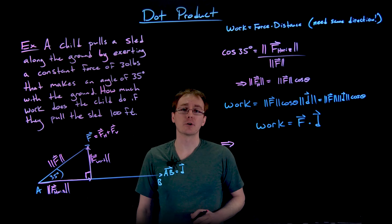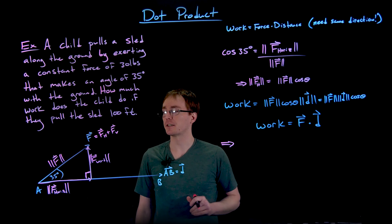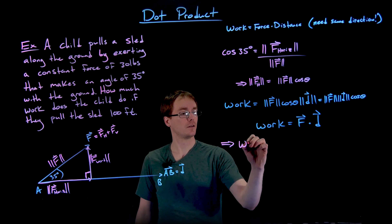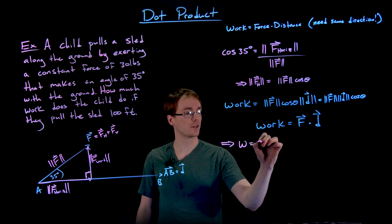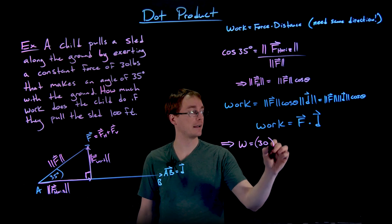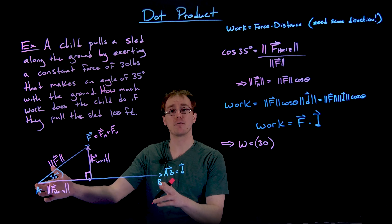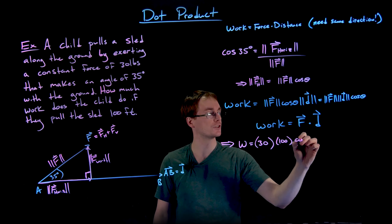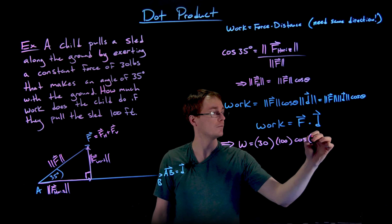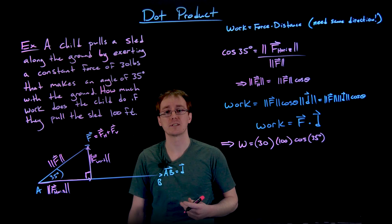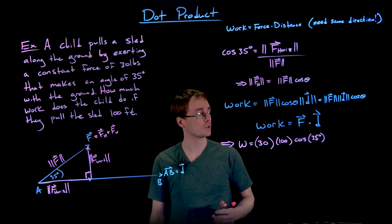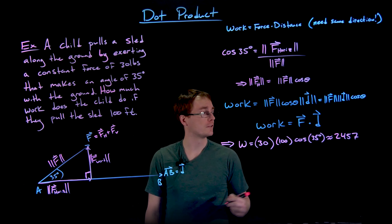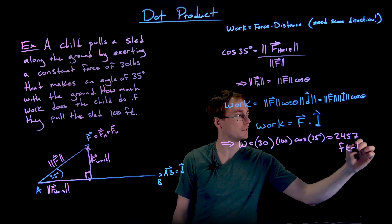Stepping back to our specific example: we have everything we need. The magnitude of our force is 30 pounds — the child is pulling the sled with a force of 30 pounds. We multiply that by the magnitude of our distance vector, which is 100 feet, and that also gets multiplied by cosine of the angle between our two vectors — the angle between the force and the direction of travel — which is 35 degrees. Computing this, we get a value of about 2457, and our units are foot-pounds.